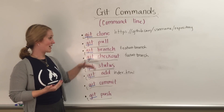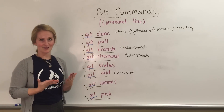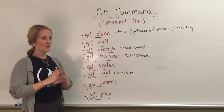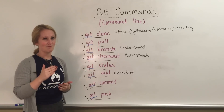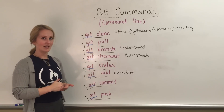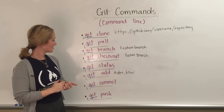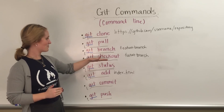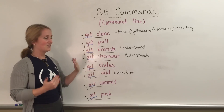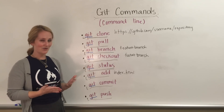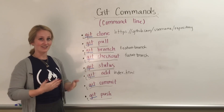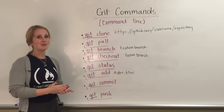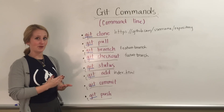Git branch is how you create a branch on your local machine. Remember, we don't want to make commits on master — we want to create a branch first. We check out to that branch with git checkout. When we do that, we're letting Git know that any commits that are made, we want them to be on that specific branch.